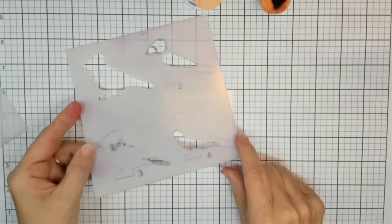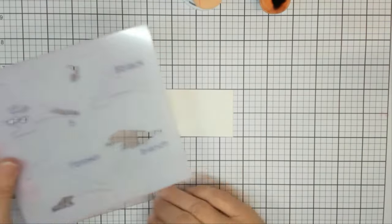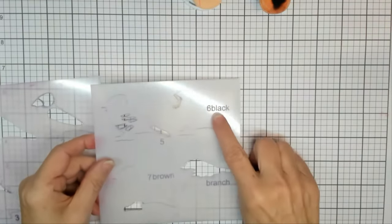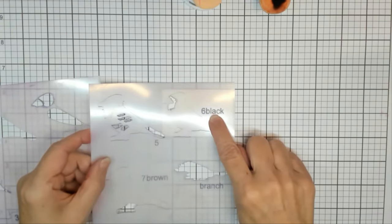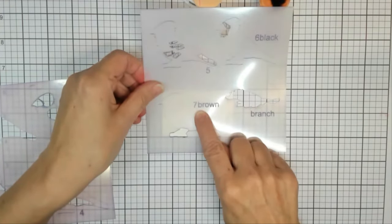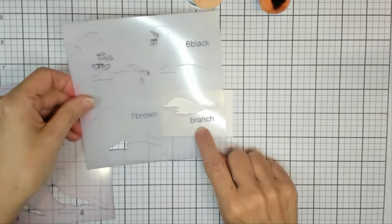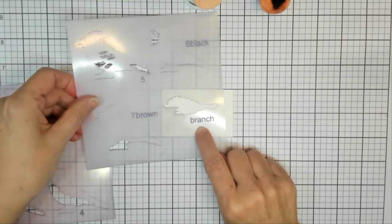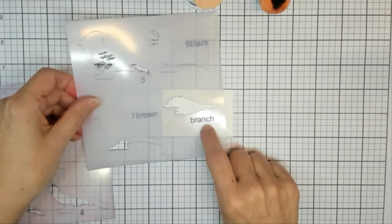See the numbers on there—five, and then I'm telling you when you get to step six you need black ink. When you get to step seven, that's brown ink. And this right here is the branch, so if you want to just ink the branch and then die cut it, you can.